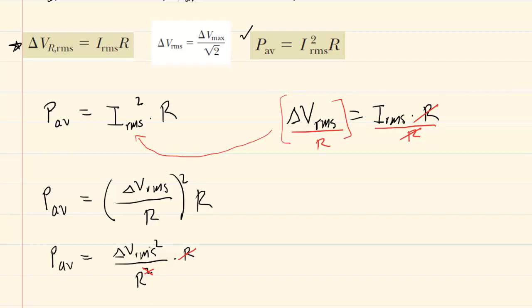We are getting somewhere, but the question, remember, gave us maximum potential difference, not RMS potential difference. That is where this third equation comes in. We can see that delta V_rms equals the maximum potential difference divided by the square root of two. So we will take that quantity and substitute it in for this delta V_rms.